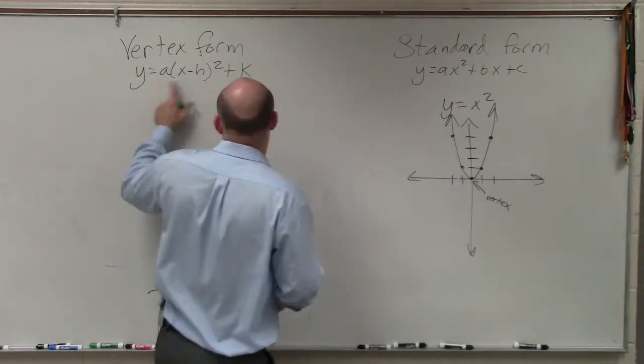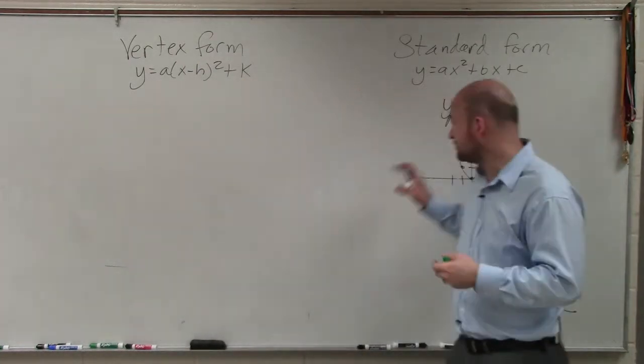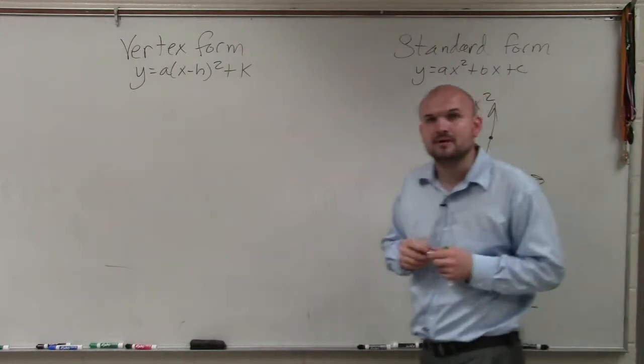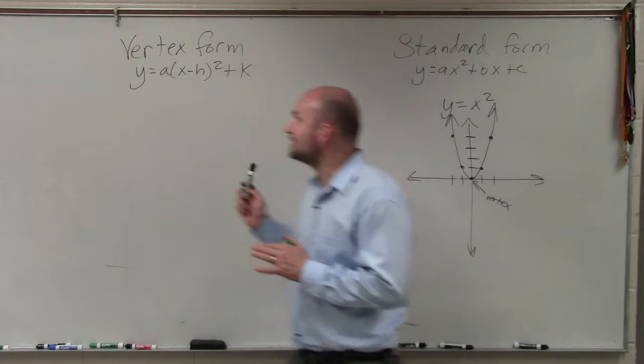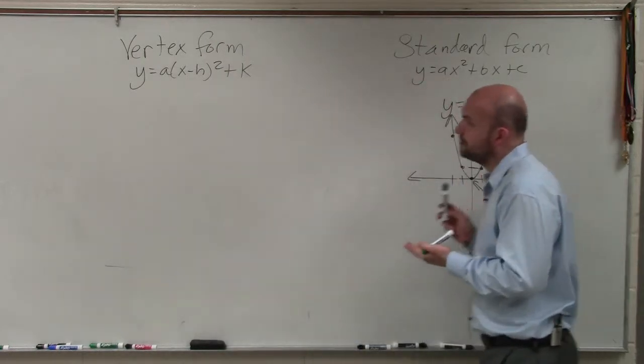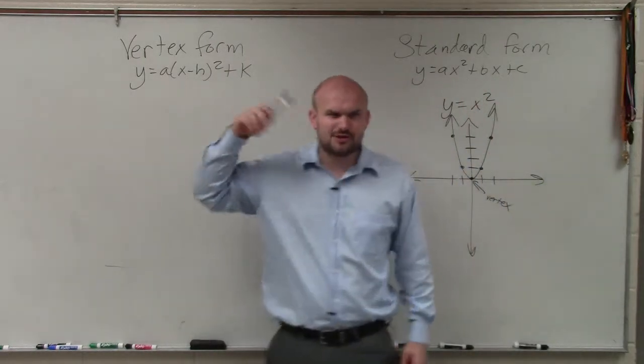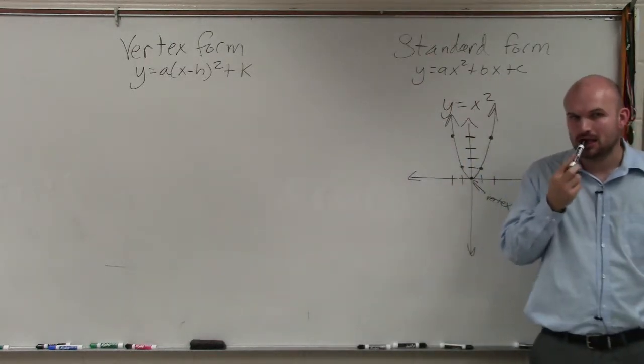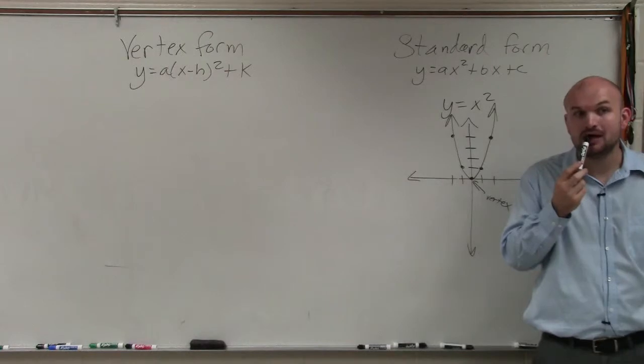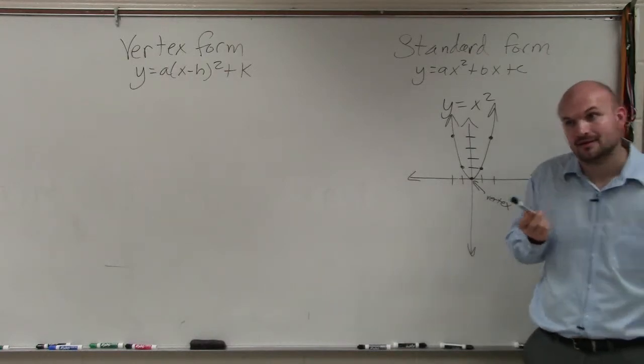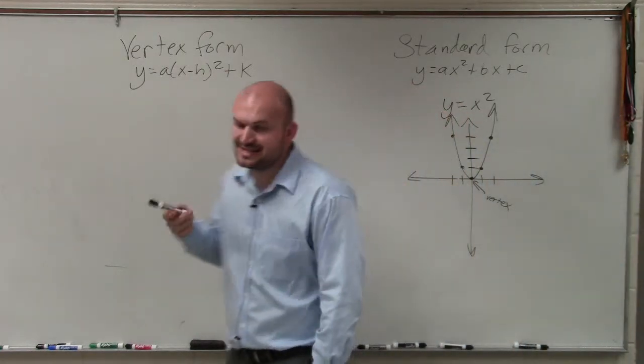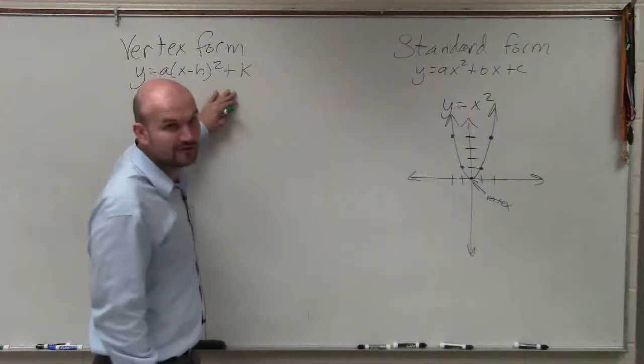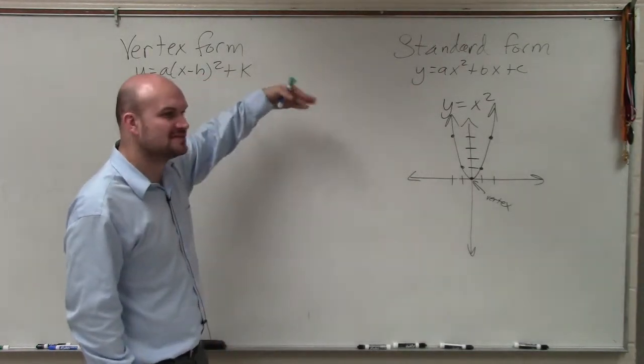So now we're going to be looking at the vertex form, which is going to be very important for us to know everything about this parent graph. The next thing that I want to highlight between the vertex form and the standard form is, you guys notice, besides x and y, what is the only other letter that they have in common? A. So A is going to have some very distinct characteristics. That's going to work for both standard form and also work for vertex form. It's going to affect the graph in similar ways.